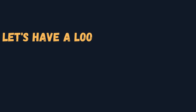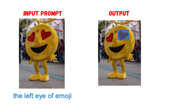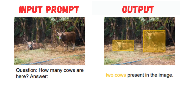Unlocking the grounding capability facilitates more efficient and convenient human-AI interaction for vision-language tasks. Microsoft researchers have highlighted four tasks that KOSMOS-2 can perform. The first capability is its ability to accurately locate objects or regions within an image. The researchers input an emoji and asked the model to find the left eye of the emoji. KOSMOS-2 accurately located the eye and placed a bounding box around it, as seen on screen. Another noteworthy capability is the model's ability to answer specific questions about an image, such as counting objects — for example, identifying the number of cows in an image — while visually highlighting them with bounding boxes.